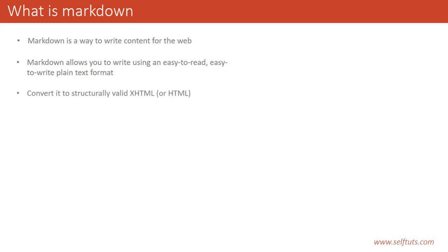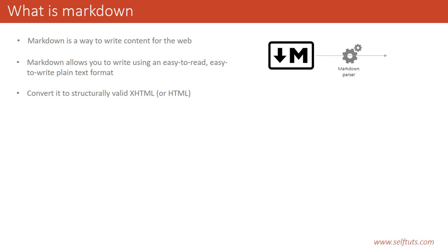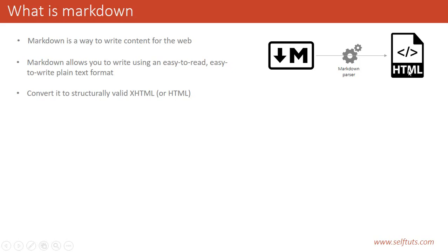Markdown converts your text into structurally valid HTML or XHTML. What Markdown does is it takes the plain text written in Markdown syntax and, using a Markdown parser, converts it into valid HTML or XHTML. So ultimately you get the document in HTML format, but to write those HTML documents in a quick, fast, and readable way we use Markdown language. There is a Markdown parser or tool which converts this Markdown syntax into valid HTML syntax.